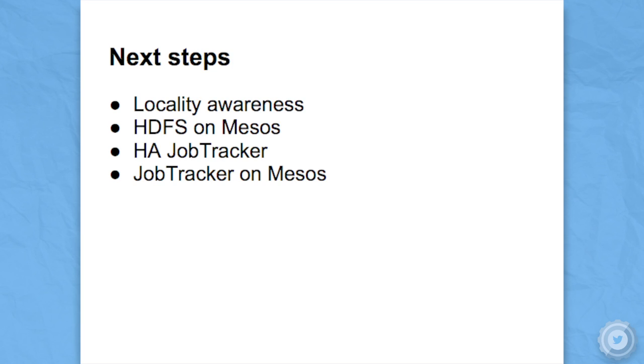So what else is there to do? Locality awareness is kind of a big deal in big data — most of the time spent processing data is in reading it, writing it, serializing and deserializing it, so cutting down on transit time can be a big win. HDFS on Mesos is a project that's been talked about. Right now we don't really have a high availability job tracker, which is a bit of a problem if you have critical jobs that run for hours and your job tracker might die. However, it's been proposed to actually run the job tracker itself as a Mesos framework — you could spin up a job tracker per job and then destroy it once the job's finished.